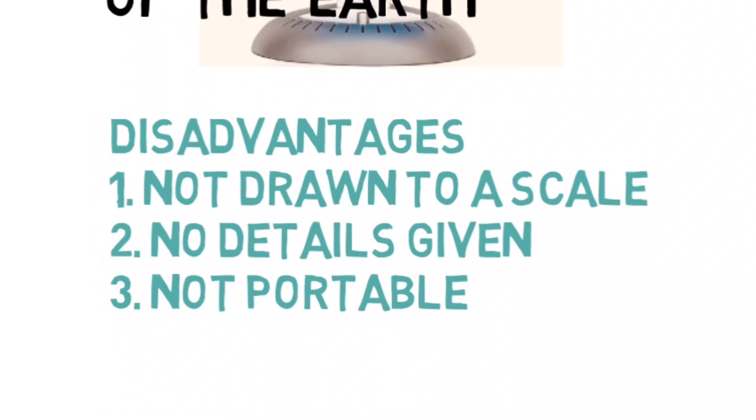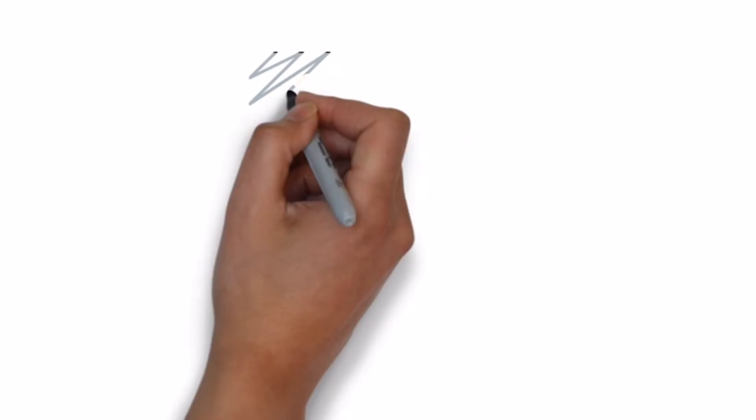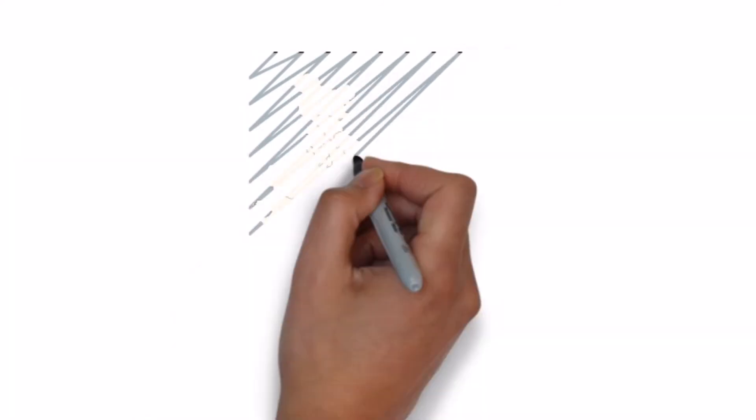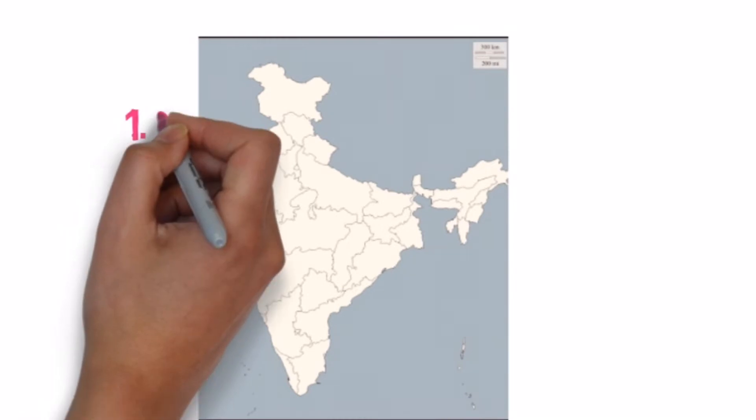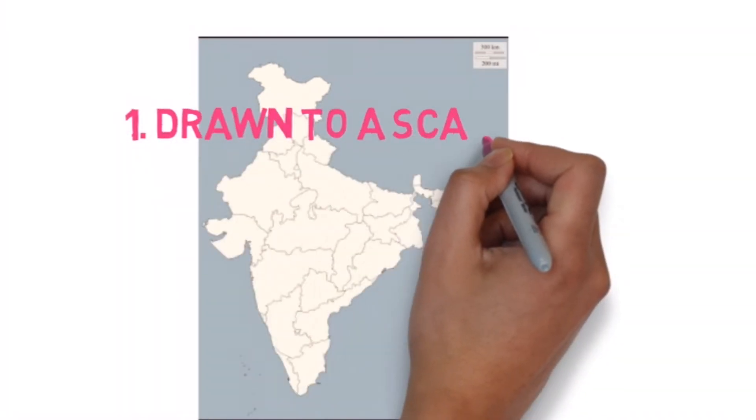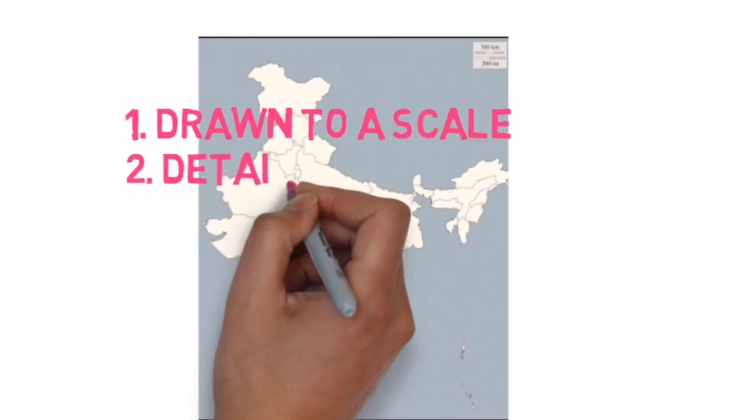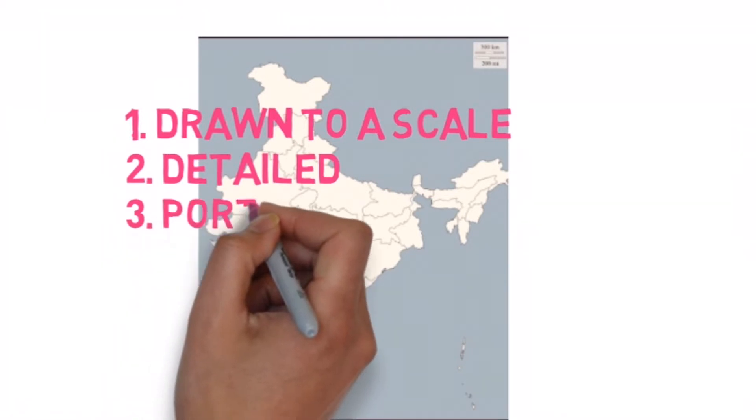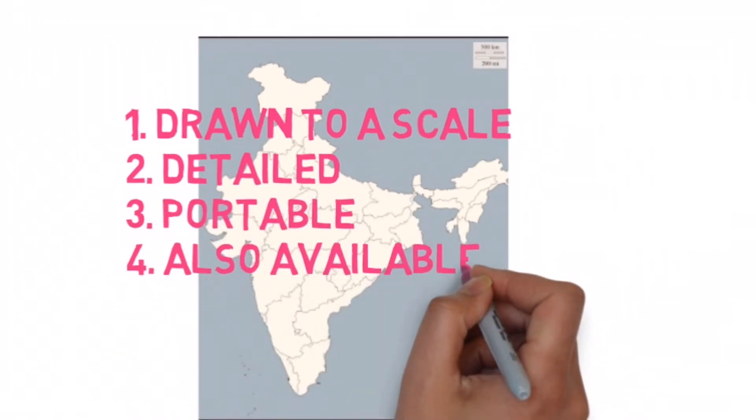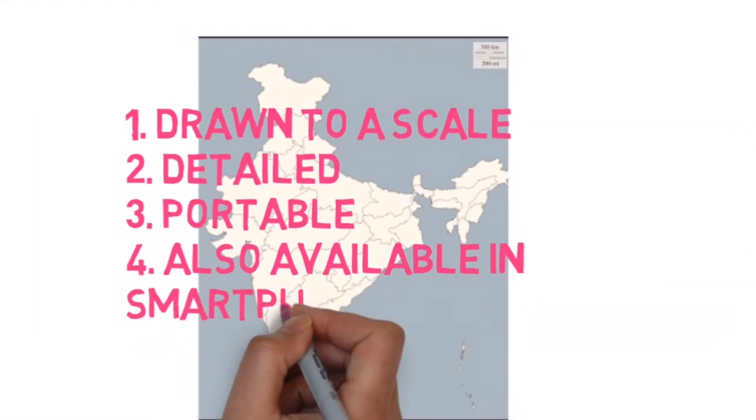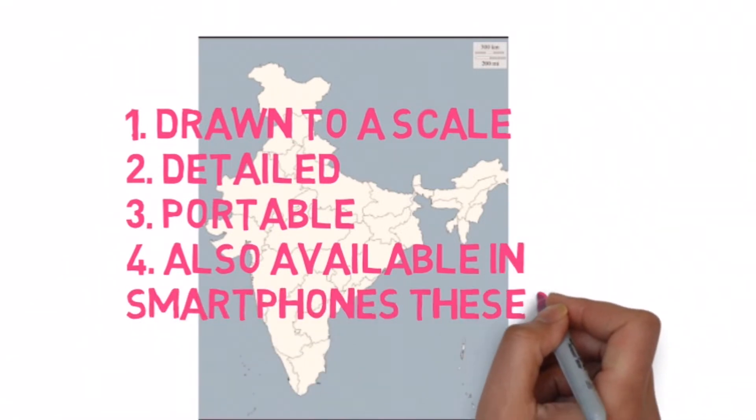Maps on the other hand are drawings of physical features, an area, a city, a country, or the world. These drawings are always drawn to a scale. They are very detailed in nature and they are also portable. It's very easy to fold a map and put it inside your bag to carry it from one place to the other. And these days maps are also available in smartphones to guide people around the city.